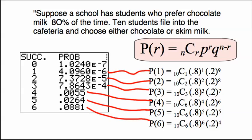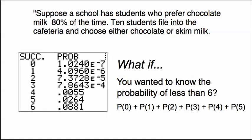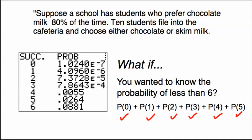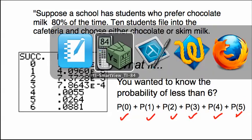Sometimes the program can't handle special cases. For example, what if you wanted to know the probability of less than six? The program didn't specifically address that. For that, you would have to add up the probabilities of exactly zero, one, two, three, four, and five — the first six values we calculated. There is a way to do it.